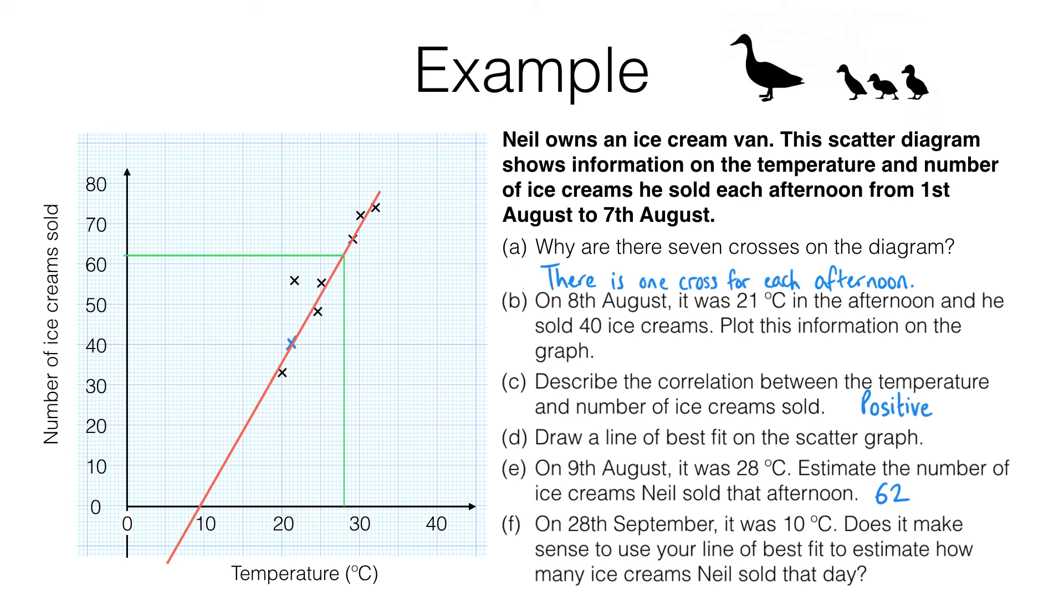In fact, we can see it's a bad idea because if we did continue the line, we'd end up having to predict a negative number of ice cream sales for, for example, a five degrees day, and that just doesn't make sense. So in general, it's a bad idea to try to use a scatter diagram to make predictions or estimates outside the range of data that you've already got. And that's why I only drew my line of best fit in part D as far as this.